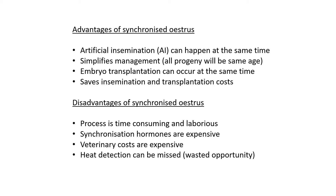Thirdly, for embryo transplantation — which we'll look at in the next video — it can also occur at the same time. In brief, embryo transplantation is when a developing embryo is taken out of a cow's body and placed into another cow (a surrogate) so she becomes pregnant. This allows the first cow, who may be genetically superior, to become pregnant again as soon as possible, maximizing her reproductive output. Lastly, it also saves insemination and transplantation costs because all the cows can be done at the same time.